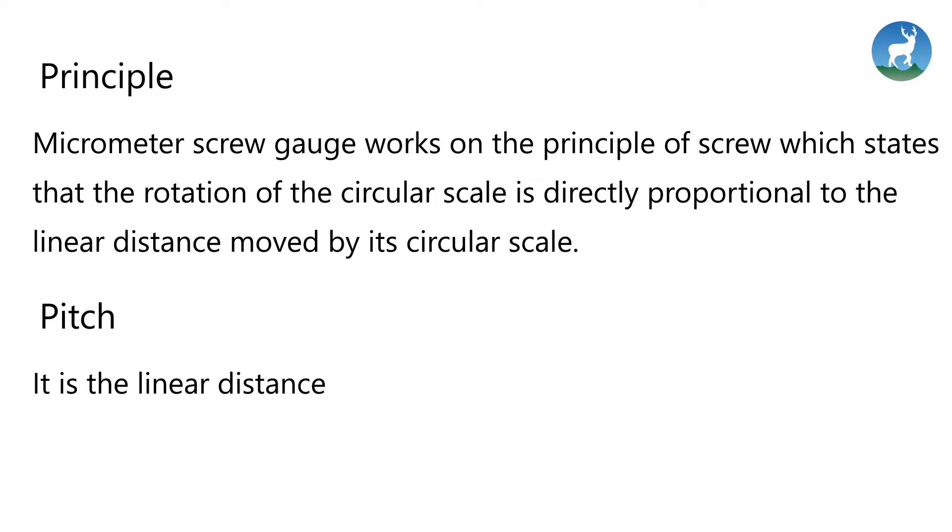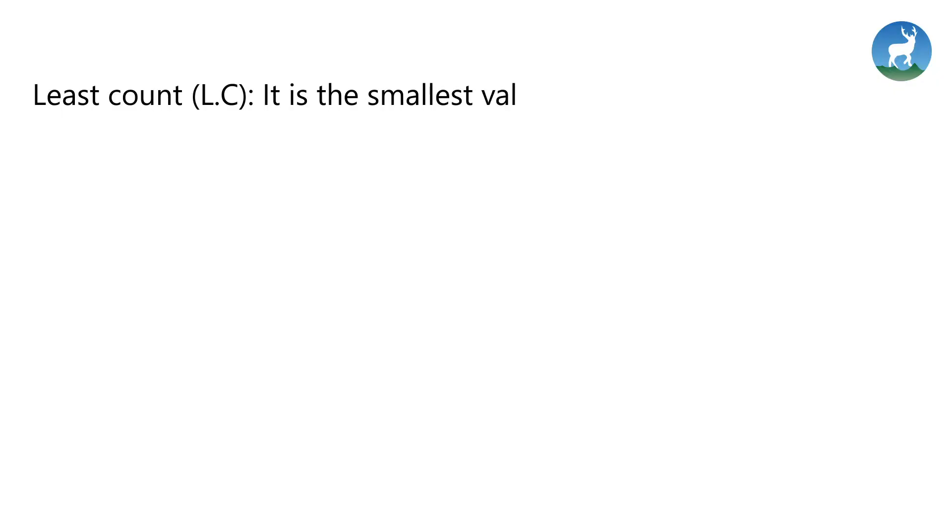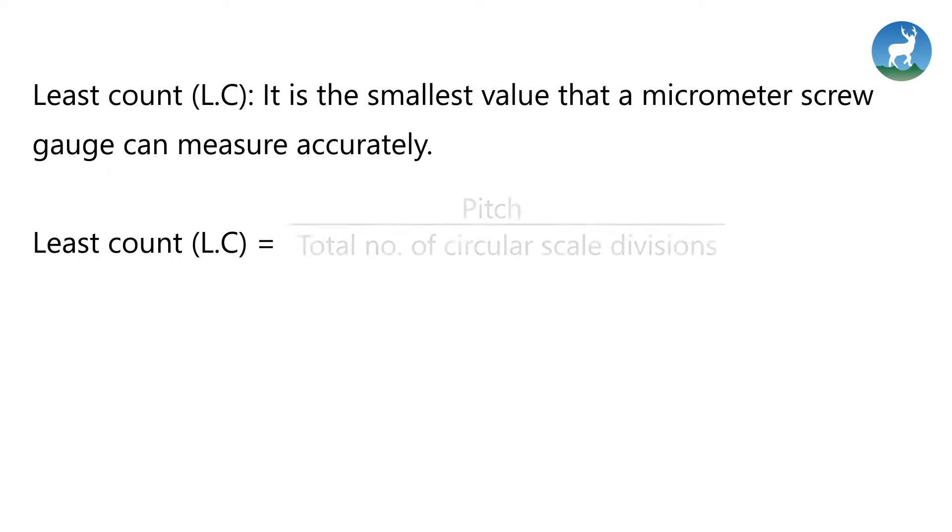Pitch is the linear distance traveled by the screw in one complete rotation of the circular scale. Least count or LC is the smallest value that a micrometer screw gauge can measure accurately. Least count is calculated by pitch divided by total number of circular scale divisions.